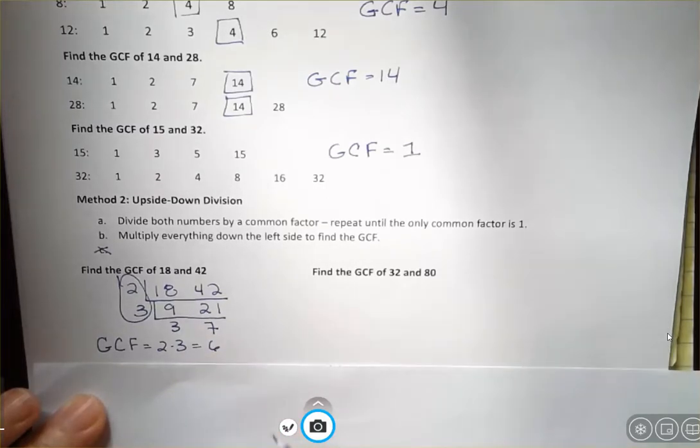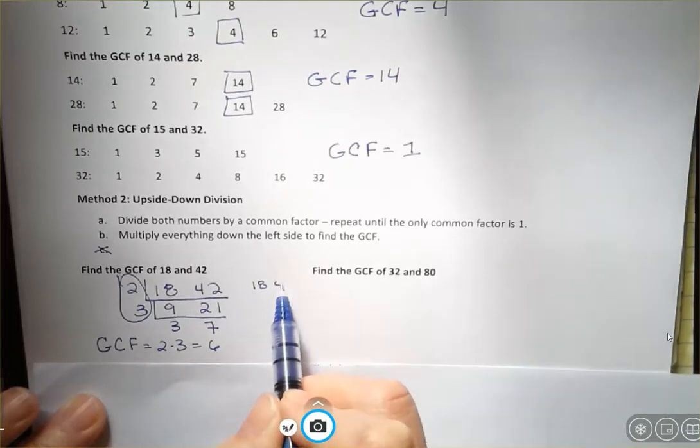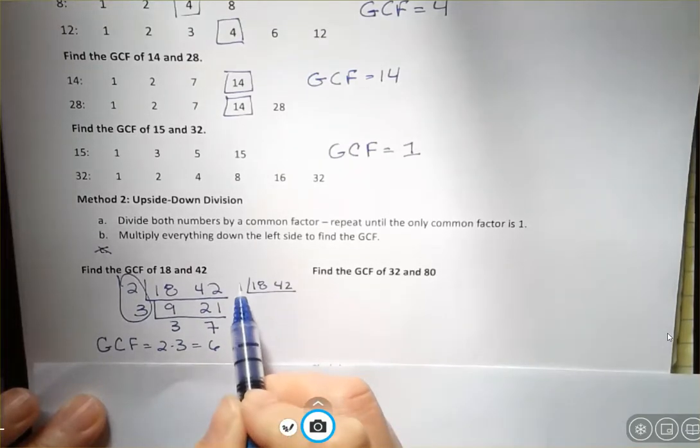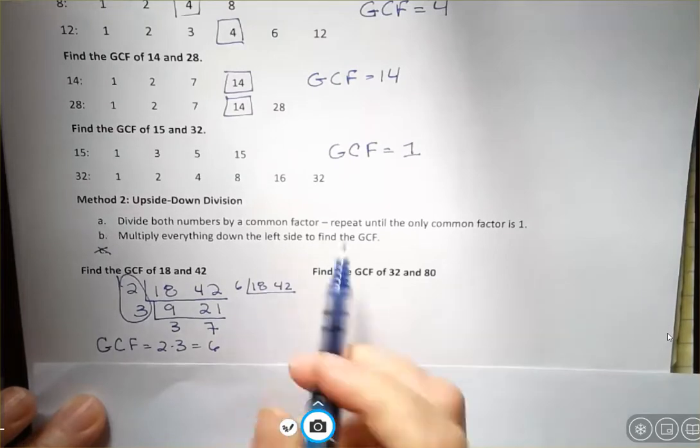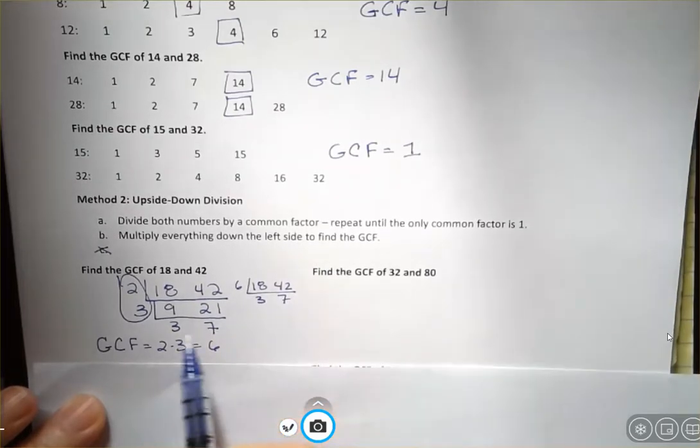And you might say, well, I saw six right away. What would you have done if you had just seen that? Well, you could have maybe seen that six goes into both of these. And if you did, you would have said this goes three times, this goes seven. Do you see how we got the three and seven anyway? We just did it in one step. And the greatest common factor is just six in that case. So maybe you can look at these and see what the greatest common factor is. But be careful because sometimes you don't see the greatest common factor.